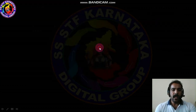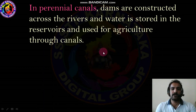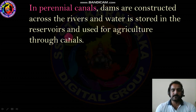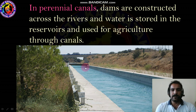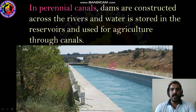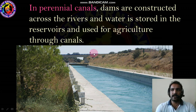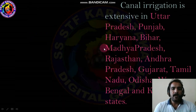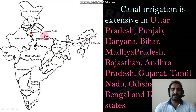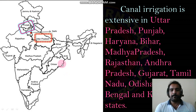Perennial canals are those where dams are constructed across the river, water is stored in a reservoir, and used for agriculture through the canal. Canal irrigation is extensive in Uttar Pradesh. Other important states include Punjab, Haryana, Bihar, Madhya Pradesh, Rajasthan, Andhra Pradesh, Gujarat, Tamil Nadu, Orissa, and West Bengal.